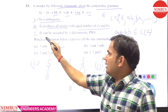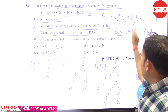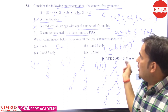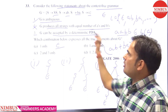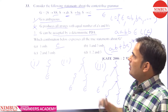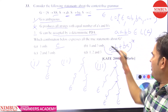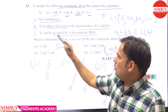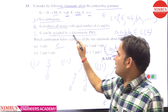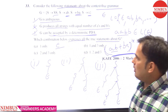Let's check the third statement: G can be accepted by a deterministic PDA. The regular expression for this grammar is (AB + BA)*, because the minimum string is epsilon, and other strings are AB and BA and their concatenations. So the given language is regular, and since it is regular, G can be accepted by a deterministic PDA by the subset property.